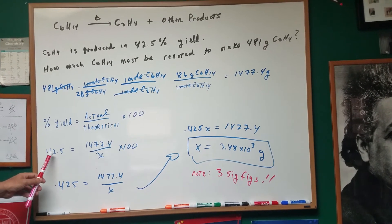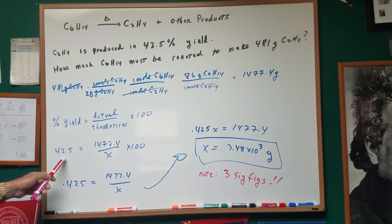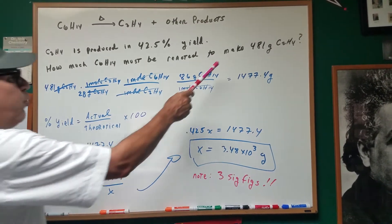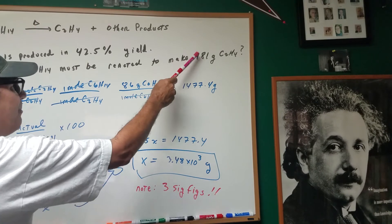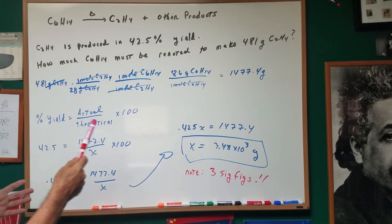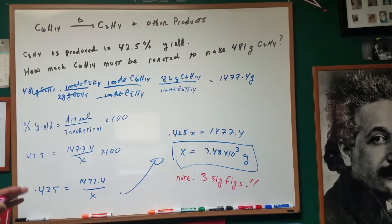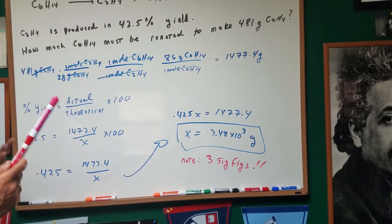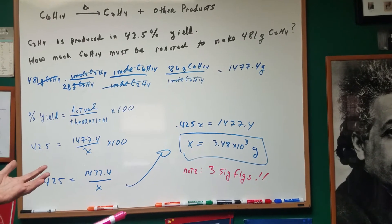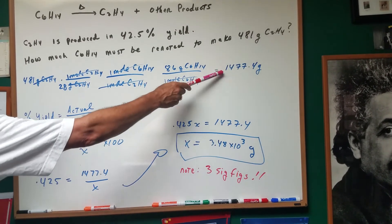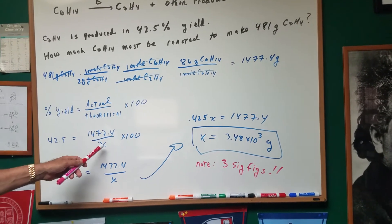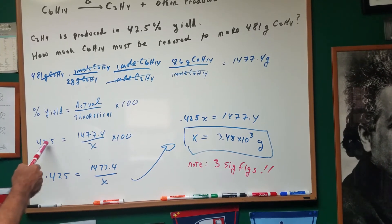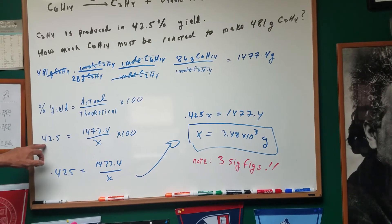Let's plug in. We know the actual yield — it was given. We know we got 42.5%. Now, the 1477.4 — that's tricky. If we want to make this, this is what's been made; this is actual. And that's where it's tricky. The question asks how much hexane must be reacted to make 481 grams. So 481 grams is what you have in your flask in lab — therefore 1477.4 is actual. So the theoretical is what we want to find. Times 100. I'm going to divide both sides by 100 — that crosses out the 100 and makes this 0.425. I crisscross multiply.